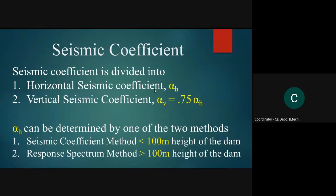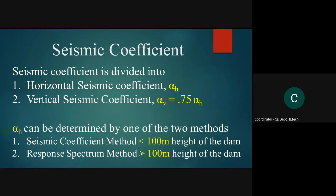The seismic coefficients are αH (horizontal) and αV (vertical). αV is generally taken as 0.75 × αH, meaning 75% of αH. The horizontal seismic coefficient αH can be determined by one of two methods: the seismic coefficient method, used when the dam height is less than 100 meters, and the response spectrum method, used when the dam height is greater than 100 meters.